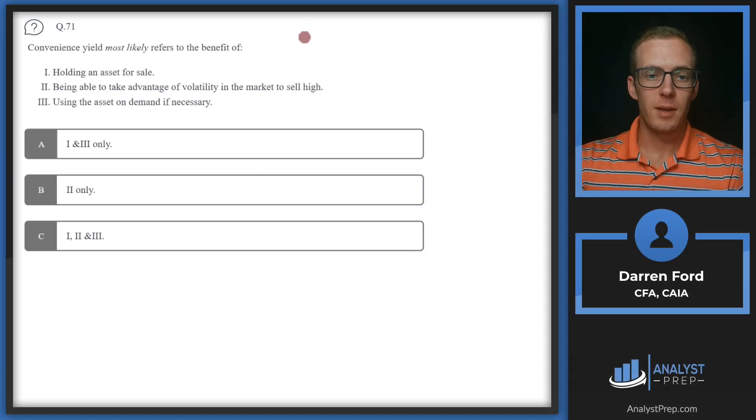Question 71: Convenience yield most likely refers to the benefit of: statement one, holding an asset for sale; statement two, being able to take advantage of volatility in the market to sell high; or three, using the asset on demand if necessary.